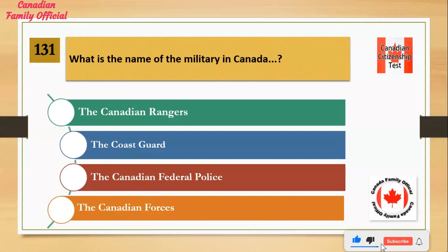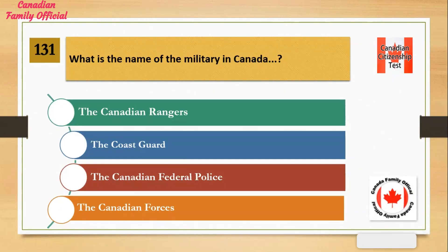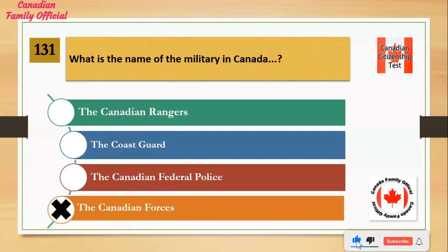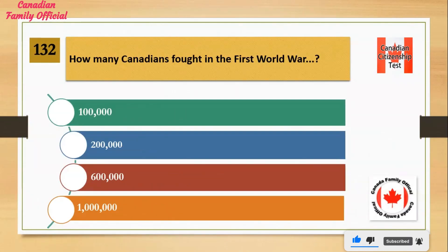What is the name of the military in Canada? Number 1: The Canadian Rangers. Number 2: The Coast Guard. Number 3: The Canadian Federal Police. Number 4: The Canadian Forces. And the answer is the Canadian Forces.